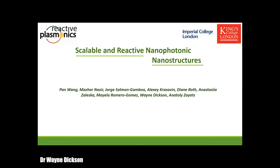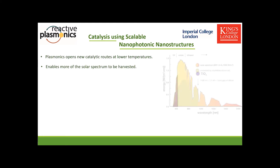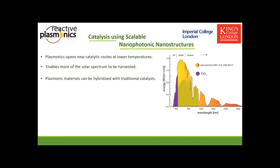Welcome everyone to this reactive plasmonics industry event. My name is Wayne Dixon from King's College London, and today I'd like to talk about scalable and reactive nanophotonic nanostructures for catalytic applications. Plasmonics opens up new catalytic routes at lower temperatures, thanks to the high energy of the carriers available upon plasmonic decay. They enable more of the solar spectrum to be harvested in contrast with traditional photocatalysts like titanium dioxide, which only harvests the blue portion of the spectrum, leaving most of the solar spectrum unused. Plasmonic materials can also be hybridized with traditional catalysts, lowering reaction energy and improving efficiency, and can be adapted to non-precious metals and novel materials.